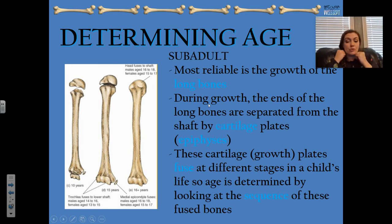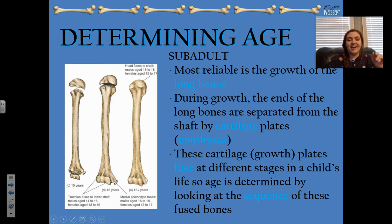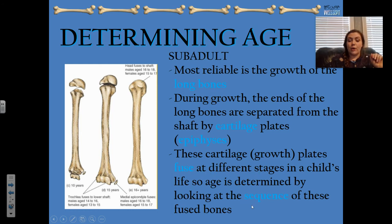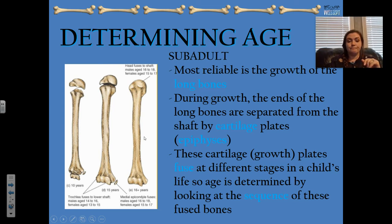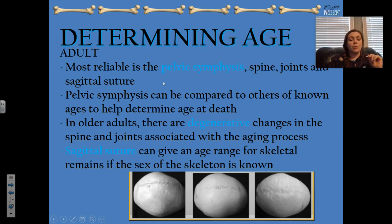For a subadult — a child before adulthood — the most reliable method is the growth of the long bones. During growth, the ends of the long bones are separated from the shaft by cartilage plates. You can see that at age 10 and at 15 there is still some separation, and by 16-plus they are usually fully fused. Males fuse from 16 to 18, and females from 15 to 17. Age is determined by looking at the sequence of those fused bones.